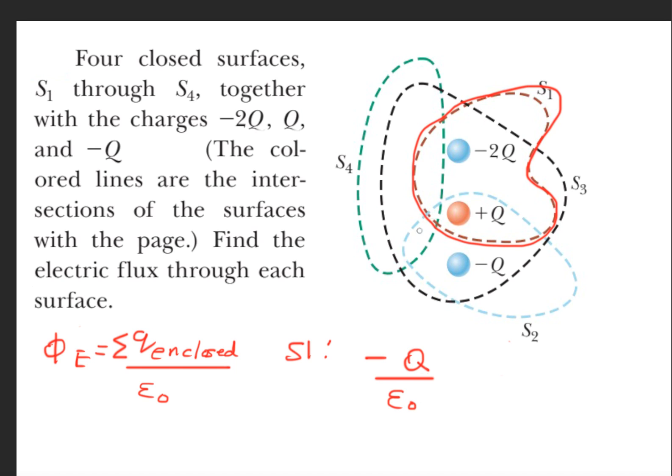So let's do surface 2. Surface 2 is right here, and as you can see, these are the charges inside surface 2: positive Q and negative Q.